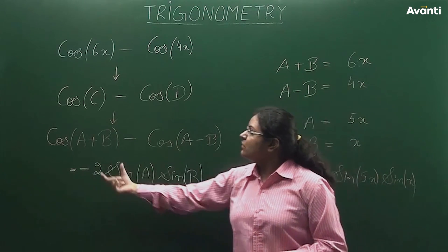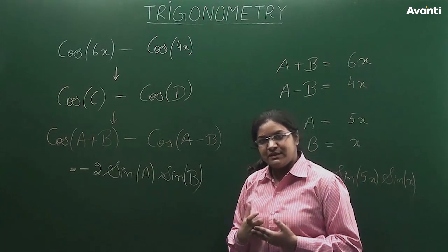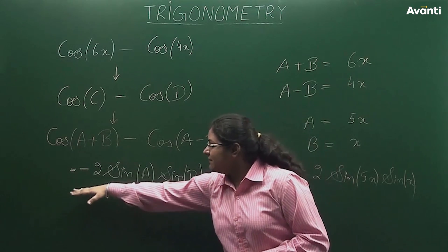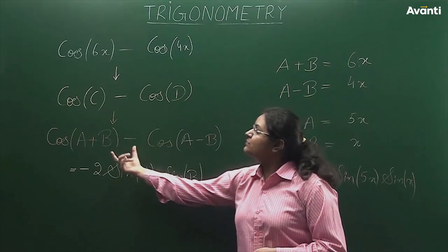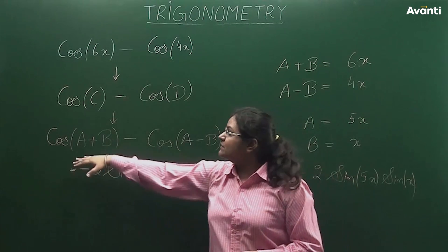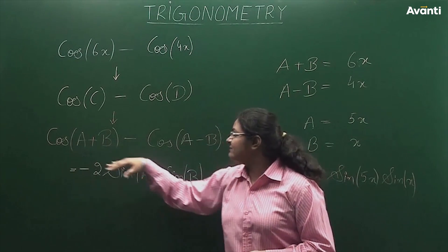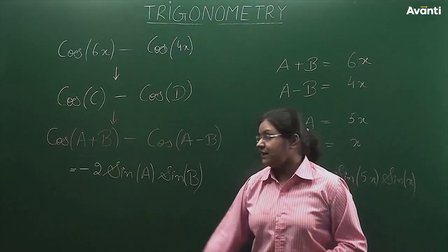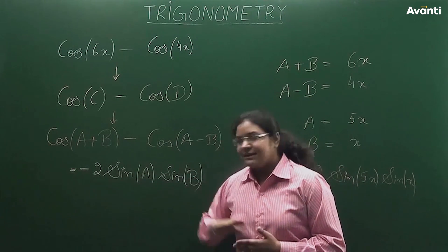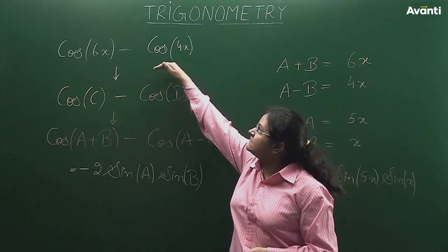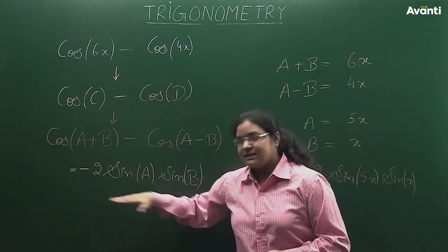Cos of (a+b) minus cos of (a−b) simplifies to minus 2 times sine of a times sine of b. Because when you expand it, the cos(a)·cos(b) terms cancel out due to the negative sign in between. So this is the final expression. If I can write cos(6x) − cos(4x) in this form, then my expression will come out.